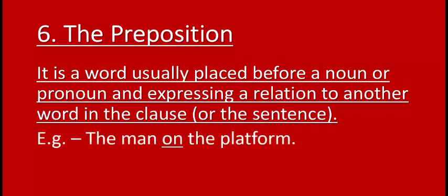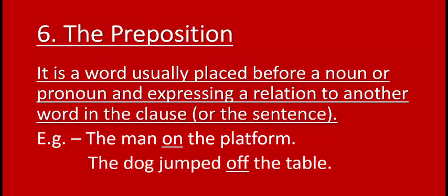For example, the man on the platform. According to the definition, a preposition is usually placed before a noun or pronoun. Here, the word on is placed before platform, so on is the preposition. It shows the relation between the platform and the man. Similarly, the word of placed before the noun table is a preposition, showing the relation between table and jump.